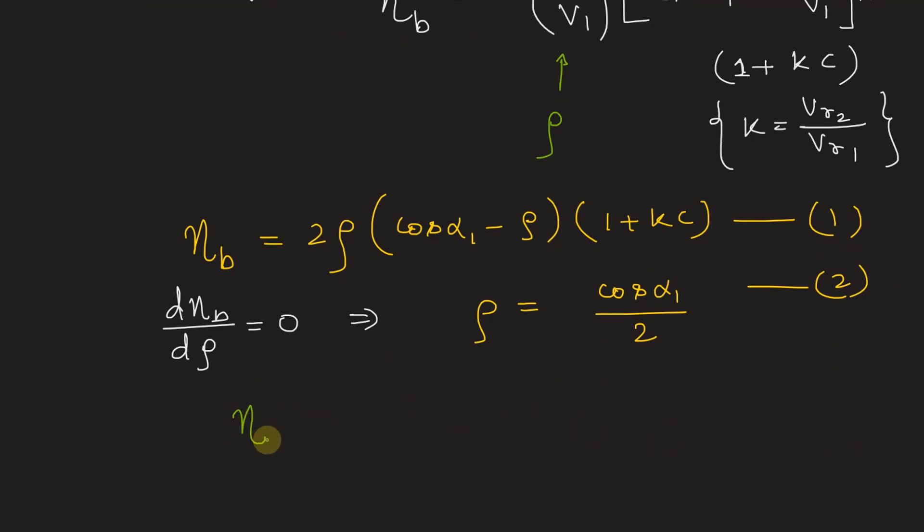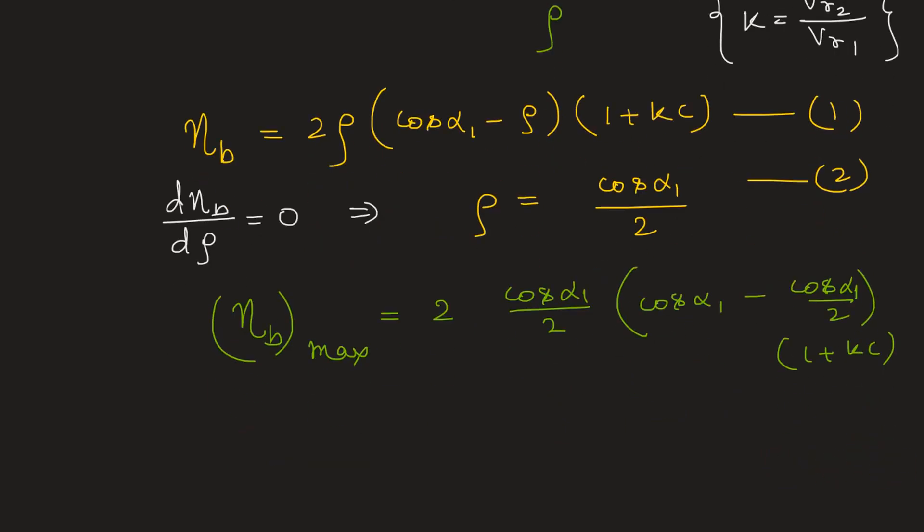So maximum efficiency here we'll get is equal to 2 times rho. Instead of rho, we'll write cos alpha 1 by 2 multiplied by cos alpha 1 minus cos alpha 1 by 2 into 1 plus k into c. Okay, so this value, so 2 will cancel out. This will be cos square alpha 1 divided by 2 into 1 plus kc. So this is the maximum blade efficiency.